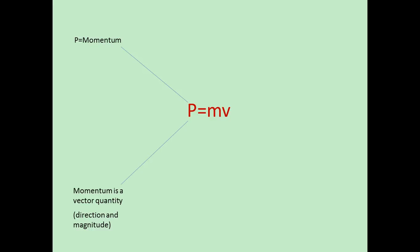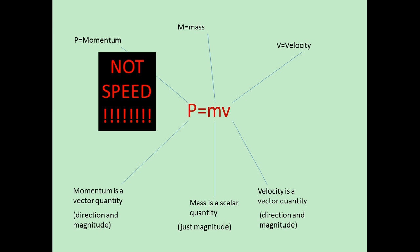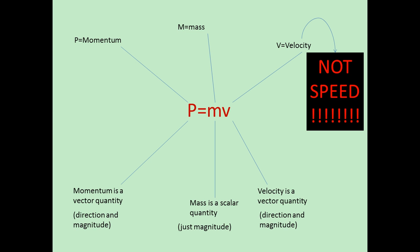The important equation to remember is P equals mv. P stands for momentum and is a vector. M is for mass and is a scalar. V is velocity, and that is also a vector. Remember, it is not speed — it is always velocity.